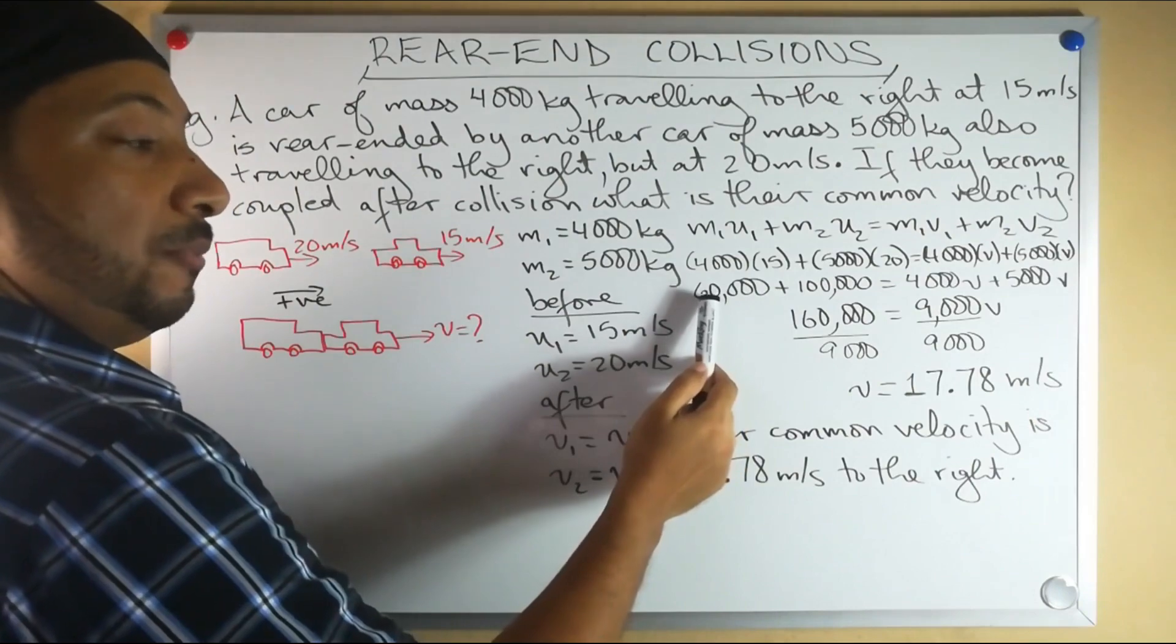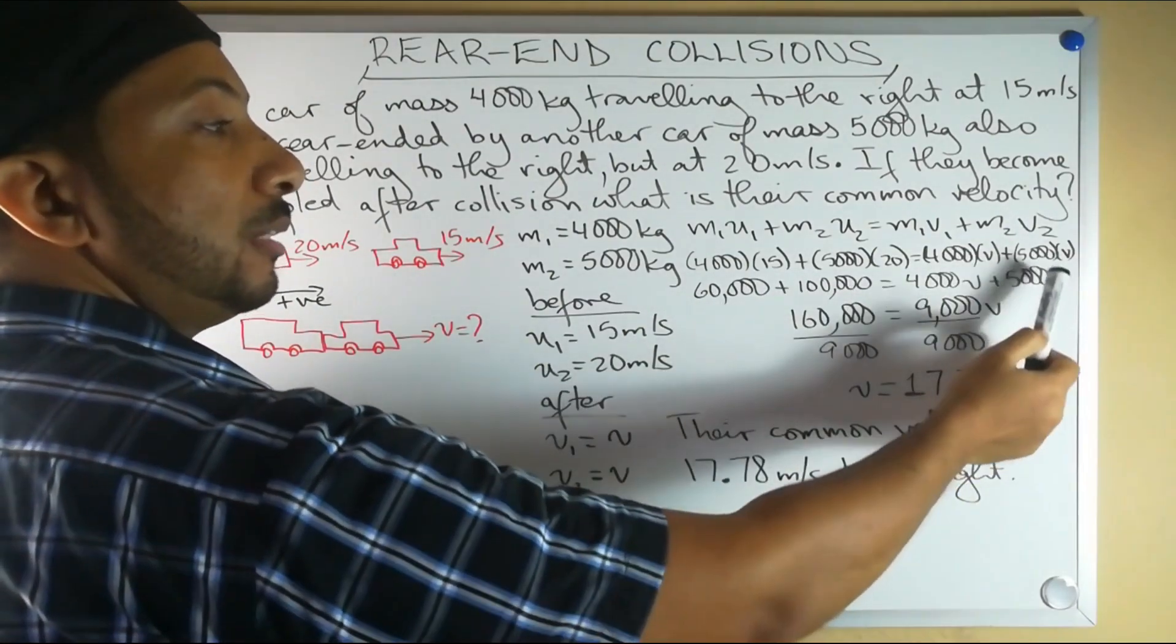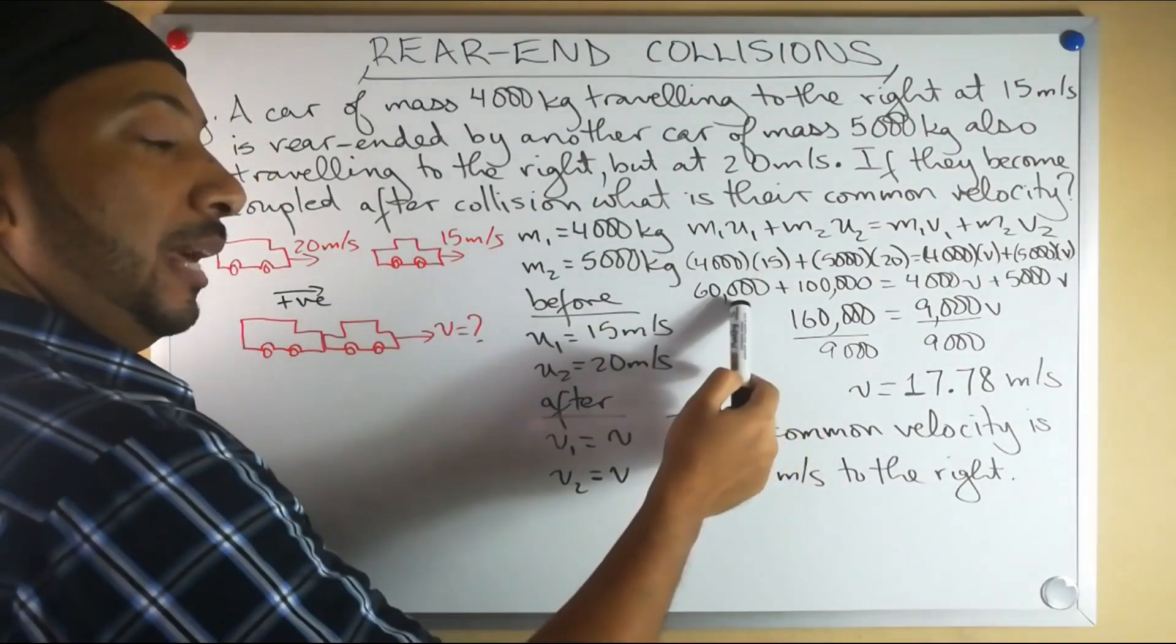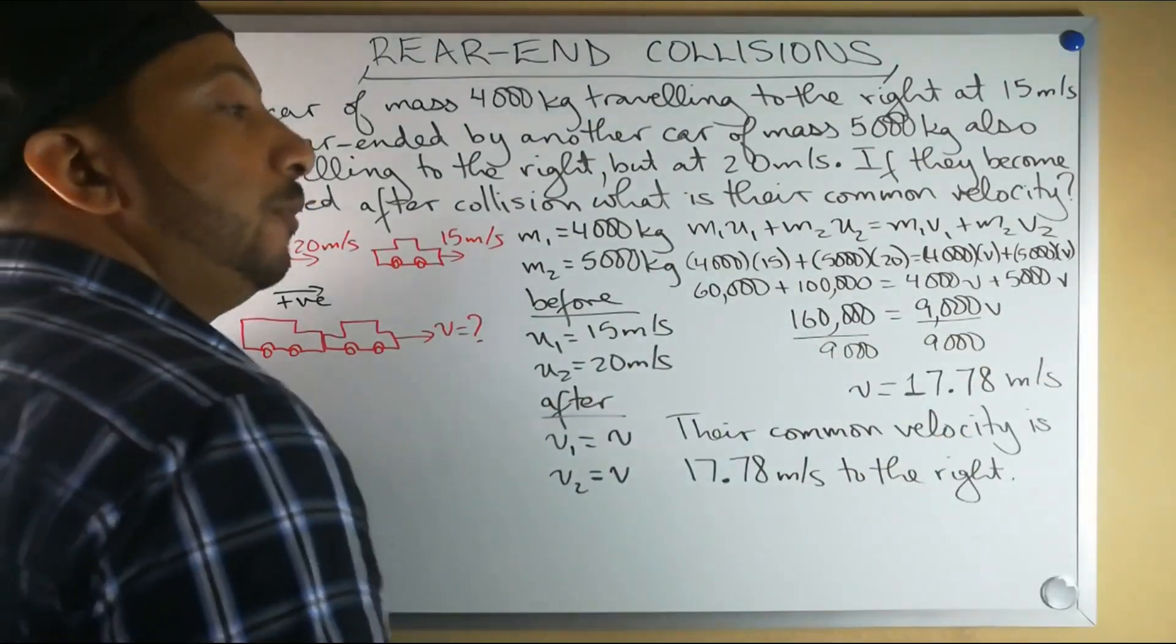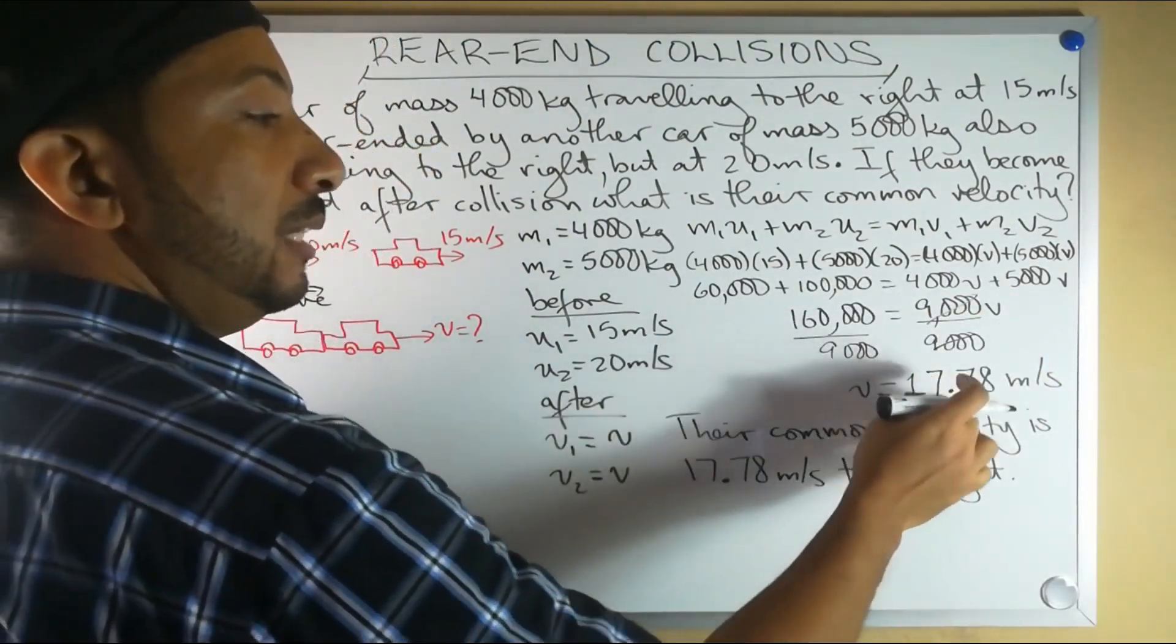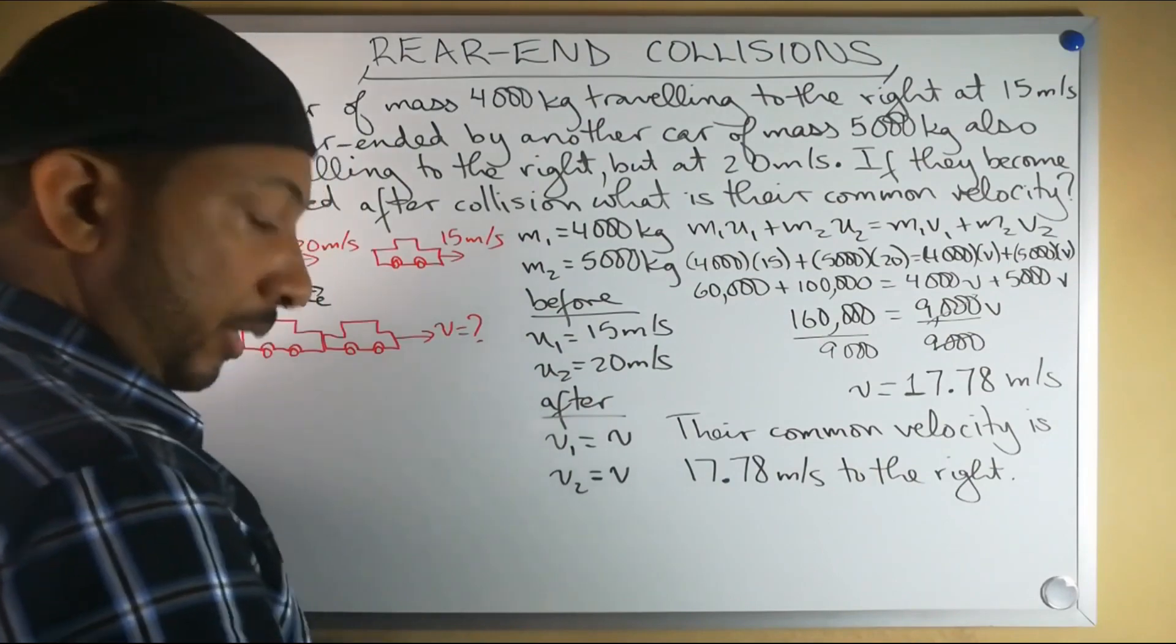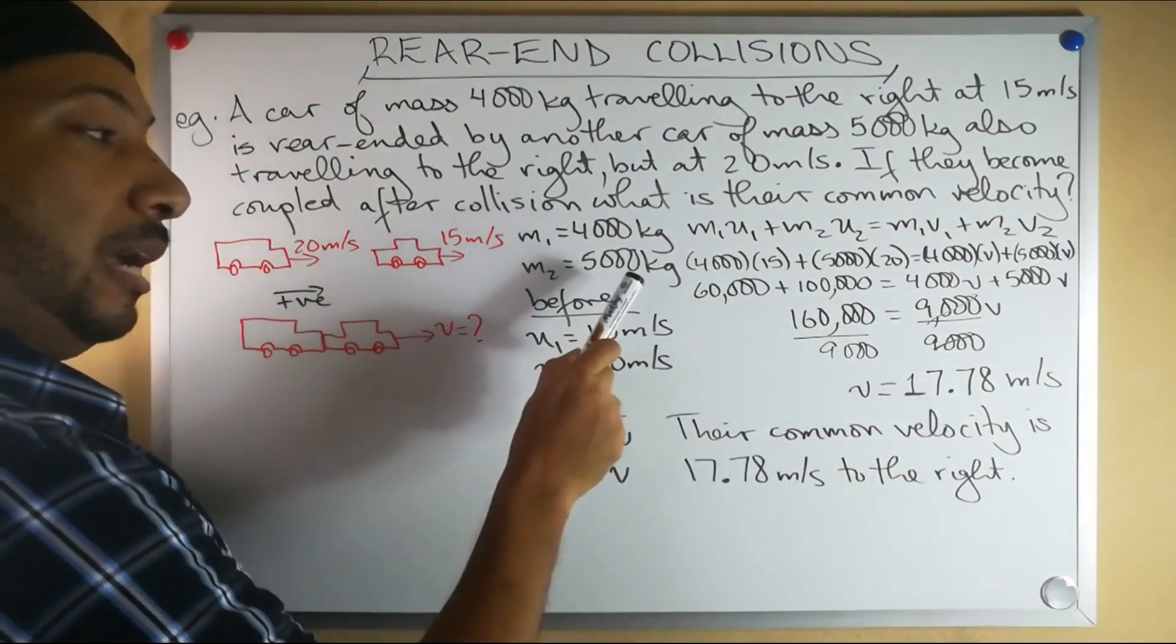Simplifying we get 60,000 plus 100,000 equals 4,000V plus 5,000V. That adds up to give you 160,000 equals 9,000V. If you divide both sides by 9,000, you get that V is equal to 17.78 meters per second.